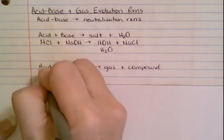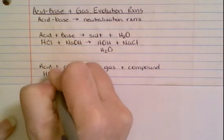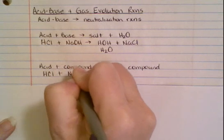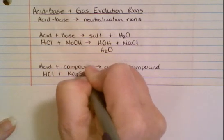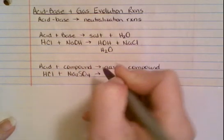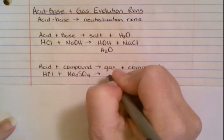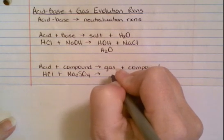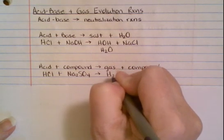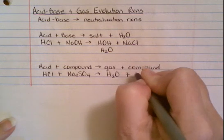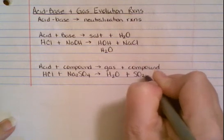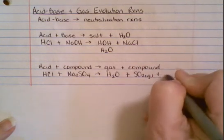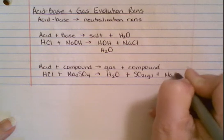Well, if I have hydrochloric acid again and I add to it Na2SO4, that tells me that I'm going to get a gas and a compound. Well, we know if we have an acid, we're also going to have to get water. So we're going to get water, and then we're going to get SO2, which is a gas, and then we're going to get our salt, which is NaCl.